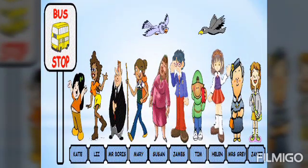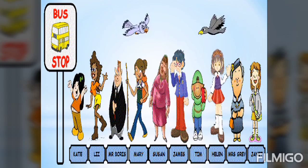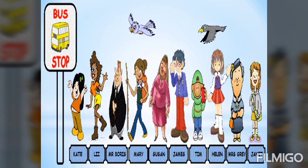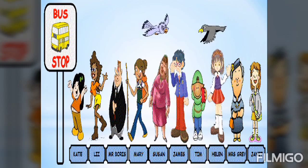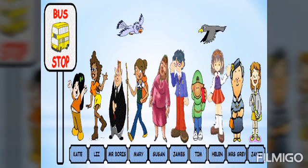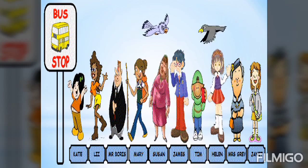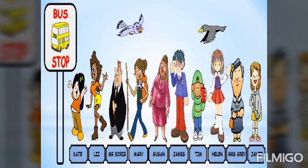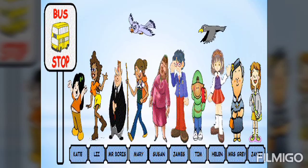This slide shows people lining up waiting for the bus. The first in line is Kate, the second is Lise, the third is Mr. Boris, the fourth is Mary, the fifth is Susan, the sixth is James, the seventh is Tim, the eighth is Helen, the ninth is Mrs. Gray, and the last one in tenth place is Janet.